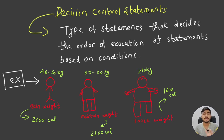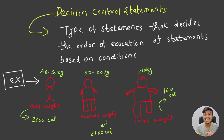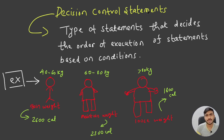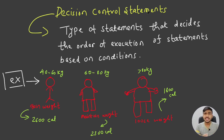Let's quickly take one simple example to understand what decision control statements are and why we need them. I have drawn three categories of people. The first category is slim people who usually have weight between 40 to 60 kg. Then we have fit people who have weight between 60 to 80 kg — they are in good shape.